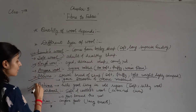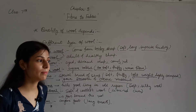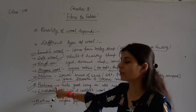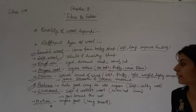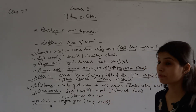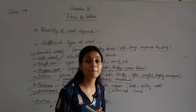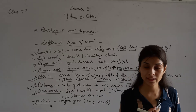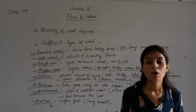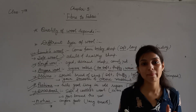Next is Pashmina wool. Pashmina wool has a soft and silky touch. Next is Shahtoosh wool, which comes from a special type of animal called Chiru. It is very costly. The government has banned the hunting of this animal and the trade of Shahtoosh wool.